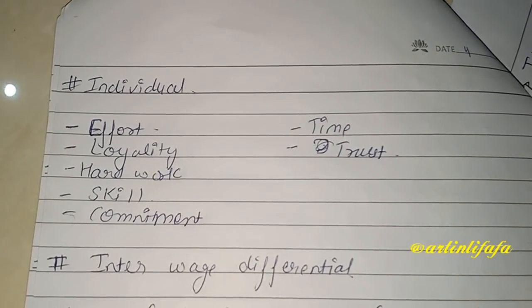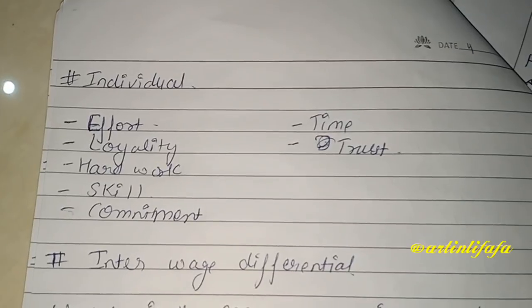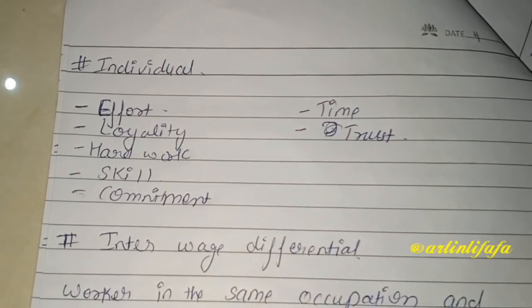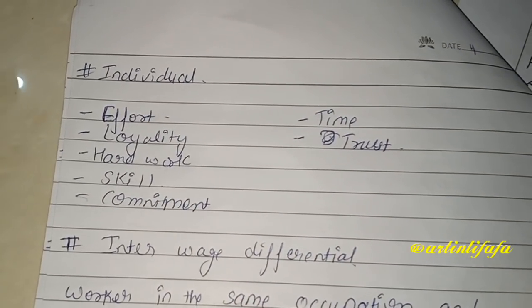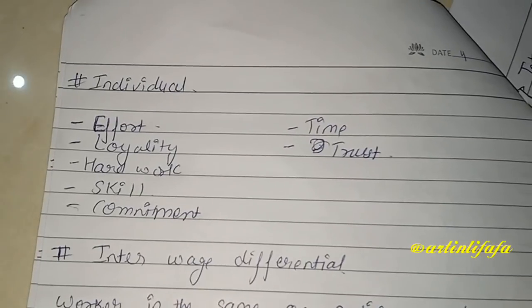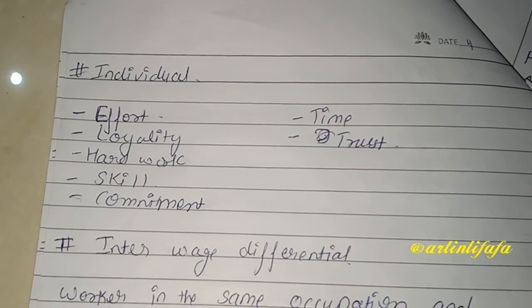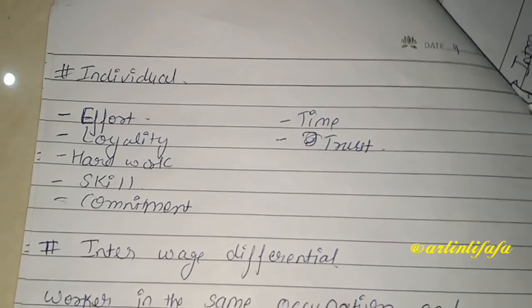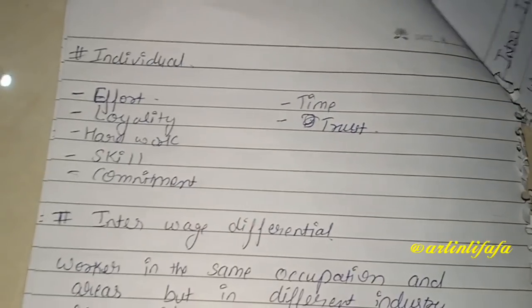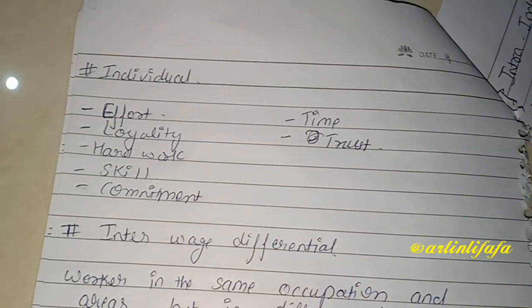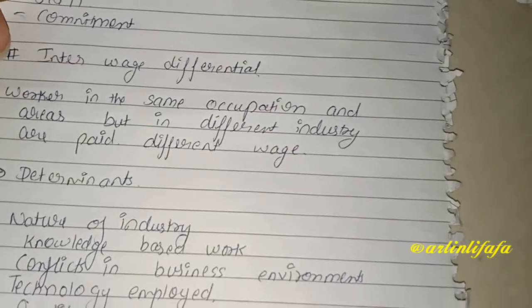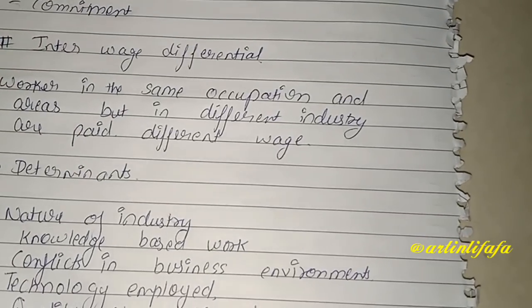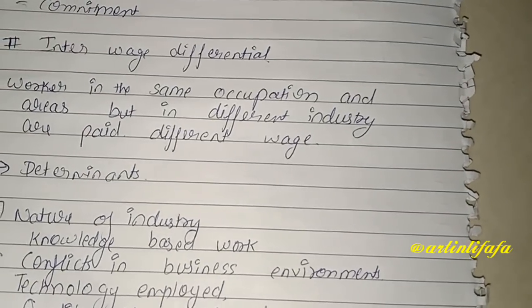Individual equity compensation میں دیکھا جاتا ہے: کتنا effort وہ organization میں لگا رہا ہے، loyalty کتنی ہے، hard work کتنا ہے، skill کونسی ہے، commitment کیا ہے، time کتنا دے رہا ہے، trustworthy ہے یا نہیں — ان سب کو دیکھ کے اس کی compensation set کرتے ہیں۔